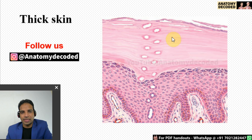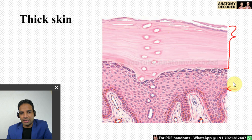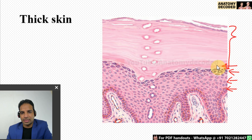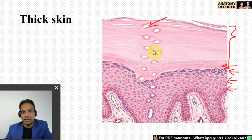Now let us see a slide of the thick skin. Here we can see a very thick stratum corneum. The other layers of the epidermis are: stratum basale, then stratum spinosum, then stratum granulosum, and a translucent layer — the stratum lucidum. All five layers will be clearly differentiated in thick skin. The round structures seen are parts of the sweat glands — their ducts cross through the epidermis and are seen as multiple openings.